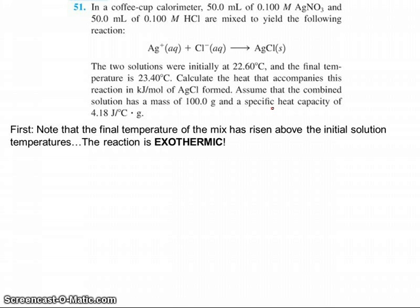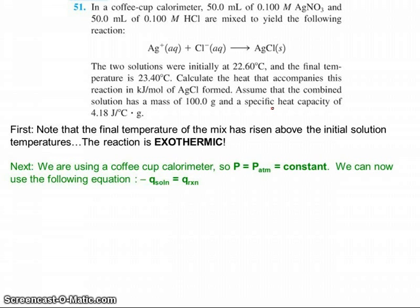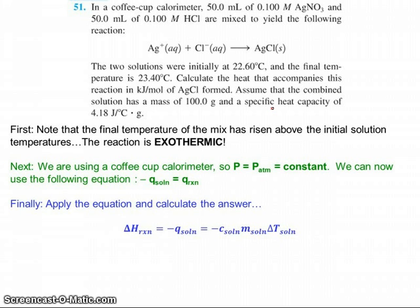First thing we need to notice is that the final temperatures of the mixture when we mix the solutions rose. So that means the solutions gained energy, which means it came from the reaction. So the reaction is exothermic. Second thing we need to note is we're using a coffee cup calorimeter, so the pressure is constant. Essentially, we're working against atmospheric pressure. So under those conditions, we can say that the heat gained by the solution has to be lost or gained by the reaction, which in our case is going to equal the enthalpy.